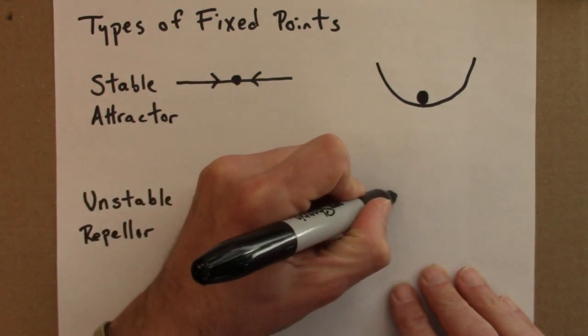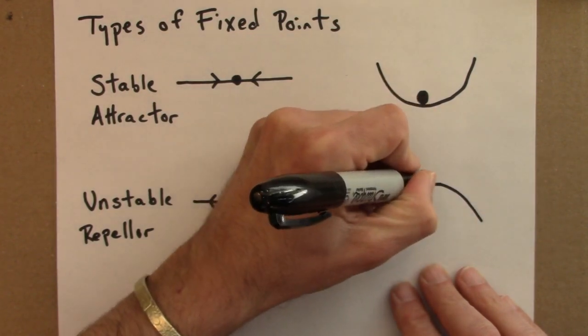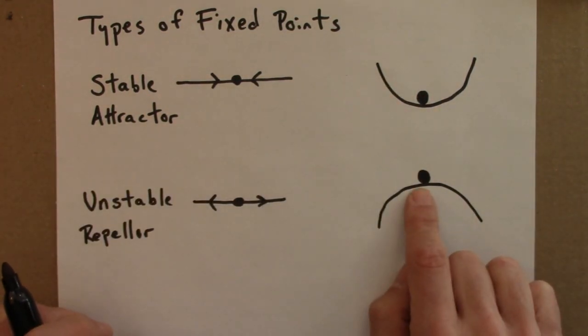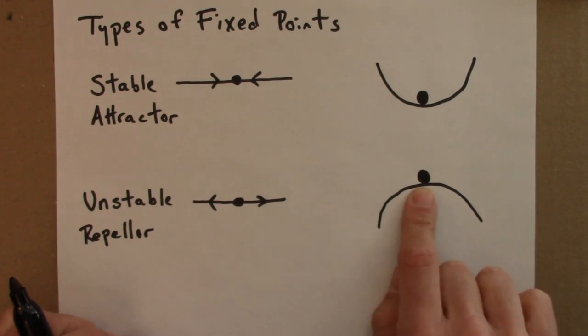An unstable fixed point can be illustrated with the opposite picture. Think of a ball carefully balanced on the top of a hill or a marble on the top of an upside down bowl. It can be balanced here, it can be fixed, not moved, but a tiny little push, either to the left or to the right, and it will roll down in one direction and it won't return here.